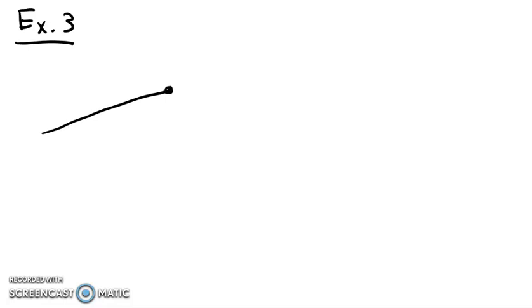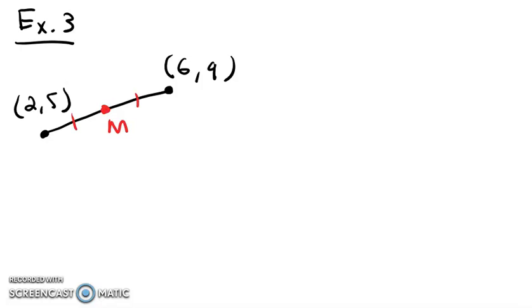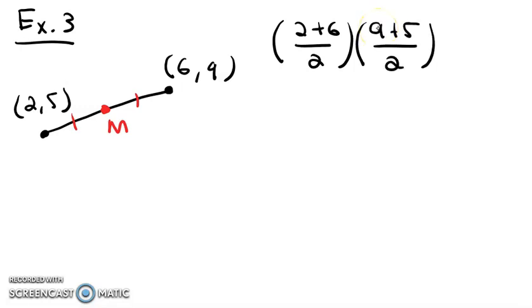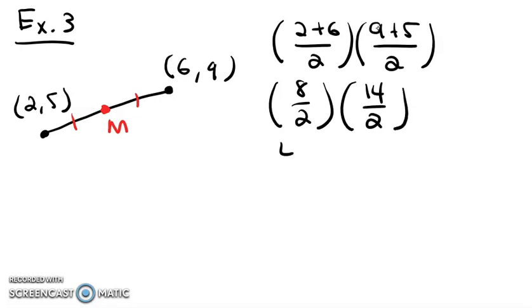Let's go through another example. Again, we have our line segment. We're going to have coordinates (6, 9) on one end, and (2, 5) on the other end. Again, we're finding our midpoint. So we're going to add 2 and 6 divided by 2 for our x coordinate, and 9 plus 5 over 2 for our y coordinate. 2 plus 6 is 8, so 8 over 2. 9 plus 5 is 14, so 14 over 2. 8 over 2 is 4, and 14 over 2 is 7. So the coordinates of our midpoint are (4, 7).